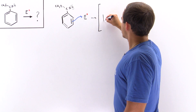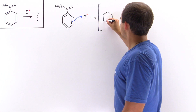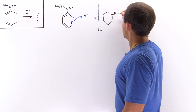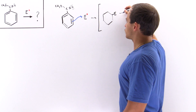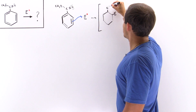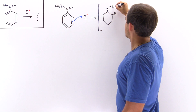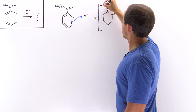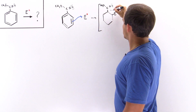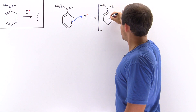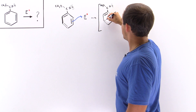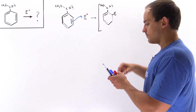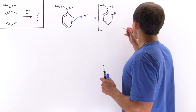Let's redraw our resonance-stabilized intermediate. We have the electrophile attached here, we have our substituent group here, a pi bond here, a pi bond here, and this carbon will have a positive charge.